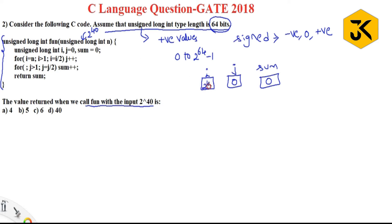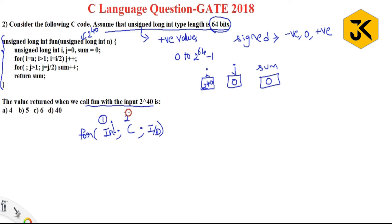The condition is: until i is greater than 1, increment j. The for loop has three parameters: initialization, condition, and increment/decrement. The initialization executes only once, then the condition is checked, then the body executes, then increment/decrement, then condition again — and so on. The initialization statement executes only one time.